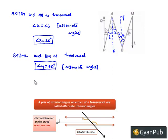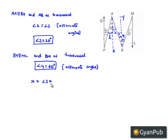We know that x is equal to angle 3 plus angle 4, that is 20 degrees plus 10 degrees. Finally, x is equal to 30 degrees, and that is the solution.